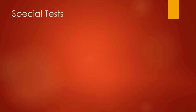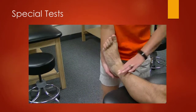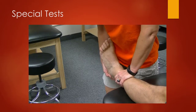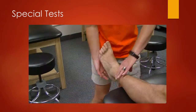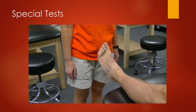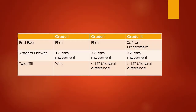Other special tests include the anterior drawer test, where you stabilize the tibia and pull anteriorly on the calcaneus. The posterior drawer test can also be performed in the opposite direction. The anterior drawer is more for the anterior talofibular ligament, and the posterior drawer is for the posterior talofibular ligament. If you look at the table, the grades are going to differ based on end feel of range of motion, with grade 3 being soft or non-existent compared to grade 1 or 2. With special testing, we're looking not so much for pain but more for laxity in the ankle.